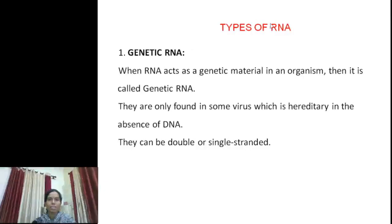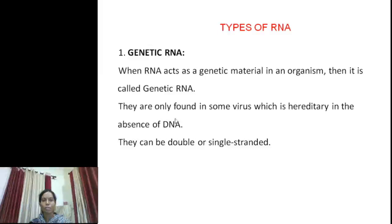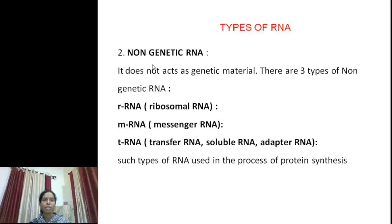The next nucleic acid is RNA, that is ribonucleic acid. RNA is of two types. First is genetic RNA, which carries genetic information from one generation to another. It is a genetic material in some lower organisms such as viruses, where DNA is absent, so RNA works as genetic material. It may be double-stranded or single-stranded. The second type is non-genetic RNA, which takes part in the process of protein synthesis and is present in higher organisms. They are of three types: rRNA, mRNA, and tRNA.